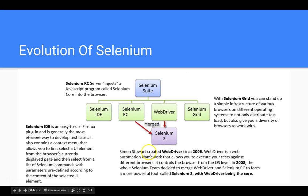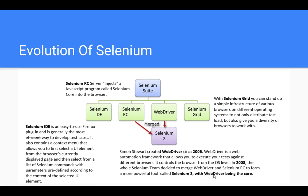Simon Stewart created WebDriver in 2006. WebDriver is a web automation framework that allows you to execute your tests against different browsers — it controls the browser from the OS level. Eventually the whole Selenium team decided to merge WebDriver and Selenium RC to form a more powerful tool called Selenium 2, with WebDriver being the core. This was a major change in the Selenium evolution, and due to this Selenium became pretty famous — it can now work on any OS with any browser combination.